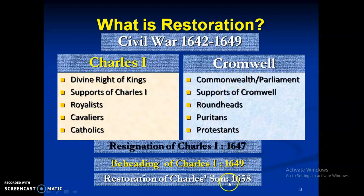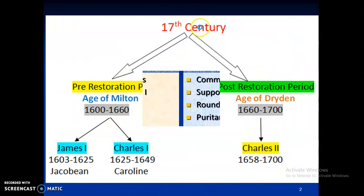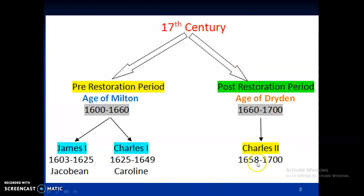The son of Charles I was living in exile in France, and he was invited back and became ruler of England. When he was restored to the throne of England, this is called restoration. The post-restoration period begins when Charles II came back — Charles II being the son of Charles I. Literature created in this period is known as restoration period or post-restoration literature, and the literature created prior to this is known as pre-restoration literature. So this was a little bit of the history of England.